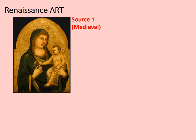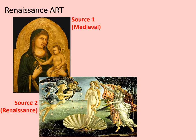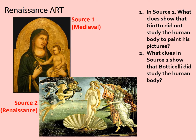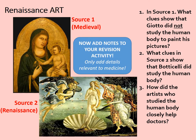First, Renaissance art. Here's an example of medieval art — a fairly unrealistically drawn picture of the Virgin Mary and the infant Christ, where the human body is not depicted particularly realistically. Source 2 is a more famous painting by Botticelli, typical of Renaissance art, showing a large amount of realism in the representation of the human body. Consider: what clues show that Giotto did not study the human body, and how did artists who studied anatomy closely help doctors? Add notes relevant to medicine and pause the video.